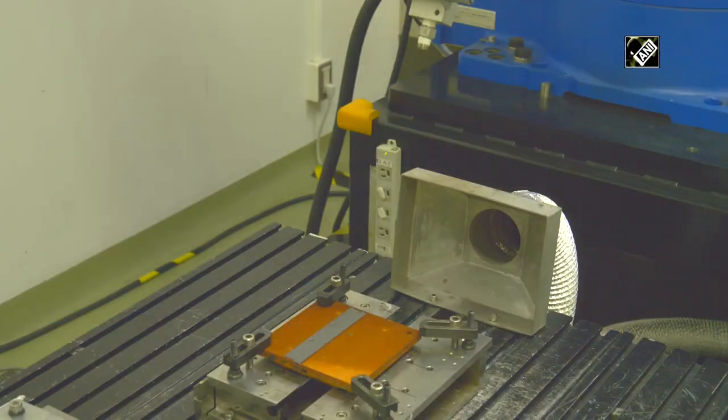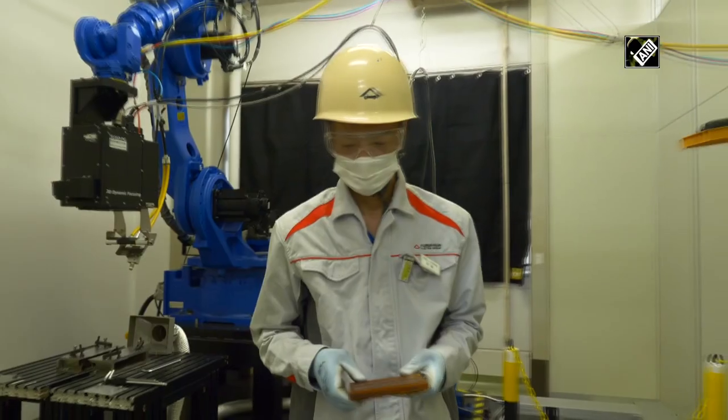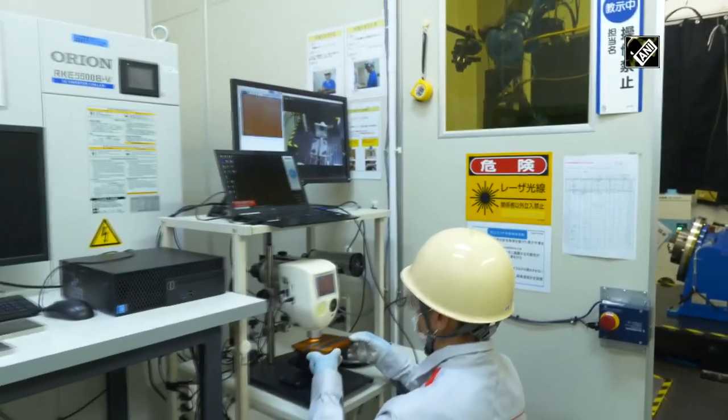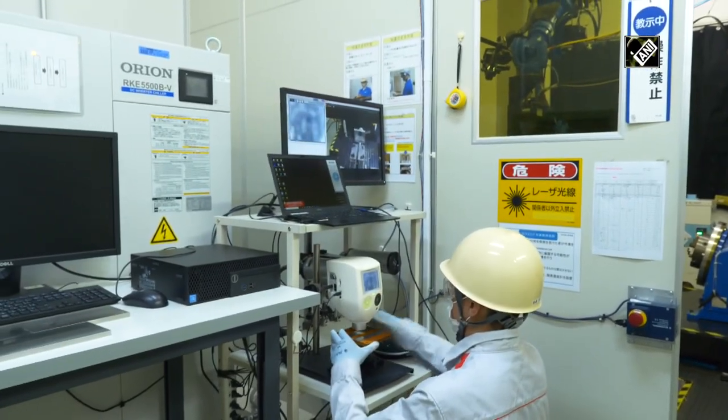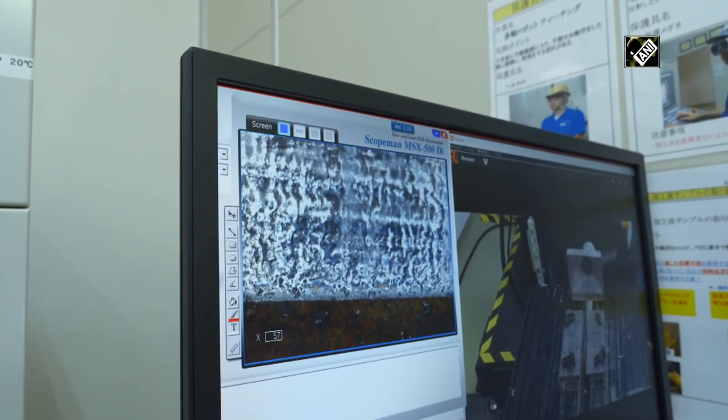Furukawa developed and launched an industrial laser. Fiber laser of Furukawa has many strong points like high beam quality, time stability, high reliability and high effect. Those ideal functions enabled quick expansion in the field of metal material processing.